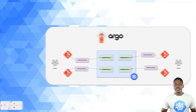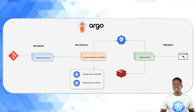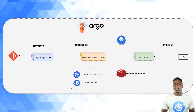Next, we're going to consider Argo's architecture and how it manages to accomplish all this. Everything happens in three steps or phases: Retrieve, Reconcile, and Present. Each one of these has a dedicated component in the Argo architecture that is responsible for handling the underlying tasks of the respective phase.